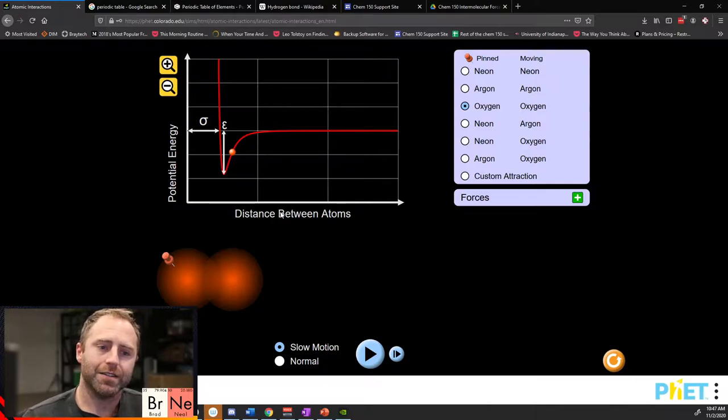So on our x-axis it's the distance between our atoms and what we want to think about here is this in terms of the distance between our nuclei. So the nucleus of the orange atom down here and the orange atom down here. Now we've selected oxygen so that we get this nice little graph that's easier to read here.